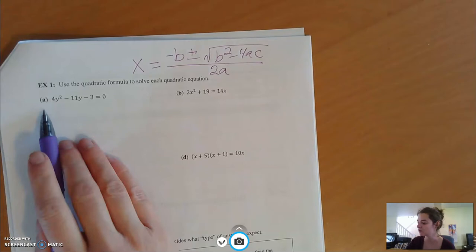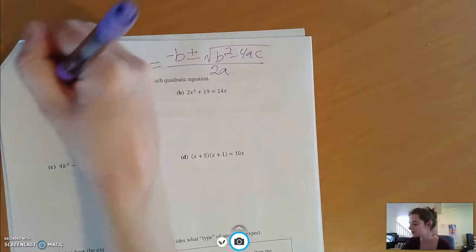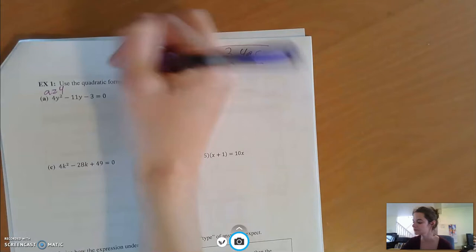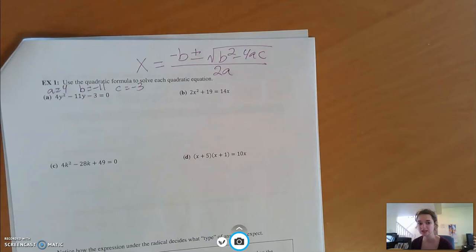Example one: 4y squared minus 11y minus 3 equals 0. This time we're solving for y, but otherwise it's very similar. Our a value is going to be 4, because that's the coefficient for y squared. Our b value is going to be negative 11, because that's the coefficient for our plain old y. And our c value will be negative 3, because that's the constant. Let's plug it in and see how it goes.